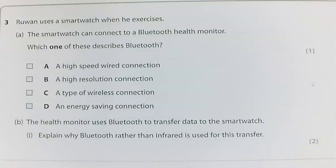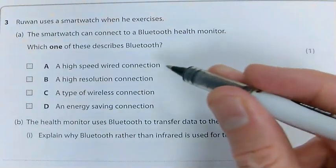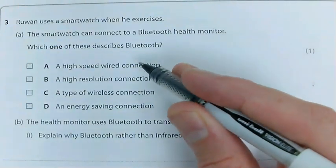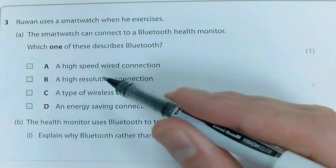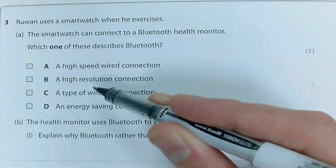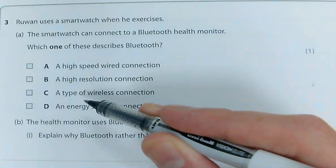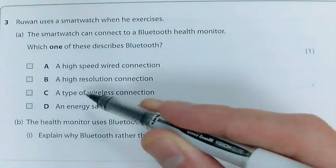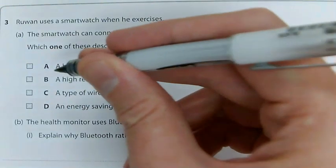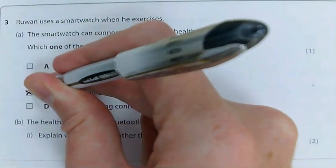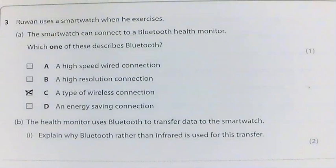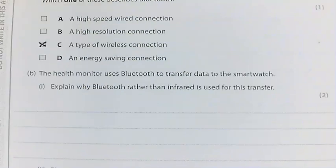Question 3: Ruan uses a smartwatch when he exercises. Part A asks which one of these describes Bluetooth. It isn't A because it may be high speed but it's definitely not wired. It isn't B because that's not particularly relevant. The correct answer is C - it's a type of wireless connection. That's all it is. It isn't energy saving.